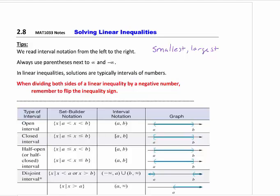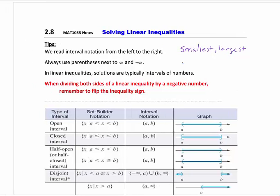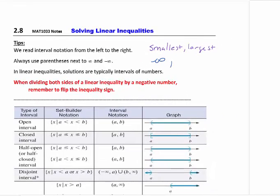If you have a graph, take your pencil and trace it across and ask: where do we start touching? Where do we stop touching it? If we're doing everything, the smallest number you're going to touch is negative infinity, which always has to be on the left side. The largest possible answer would be positive infinity, which always has to be on the right side. You cannot put negative infinity on the right-hand side — that's empty set. You cannot put positive infinity on the left side.